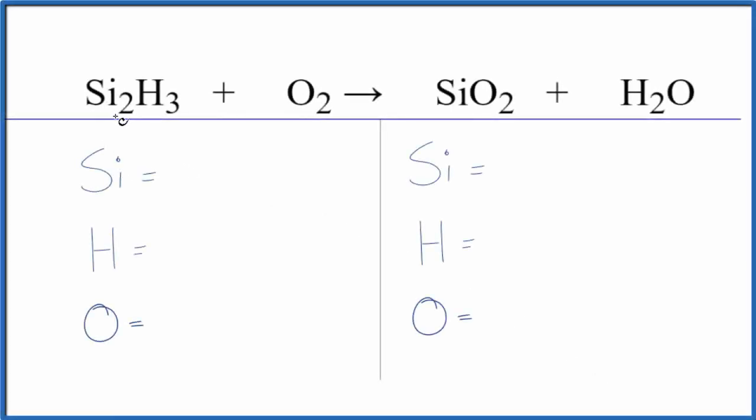To balance this equation, we have Si2H3 plus O2. Let's count the atoms up on each side of the equation.